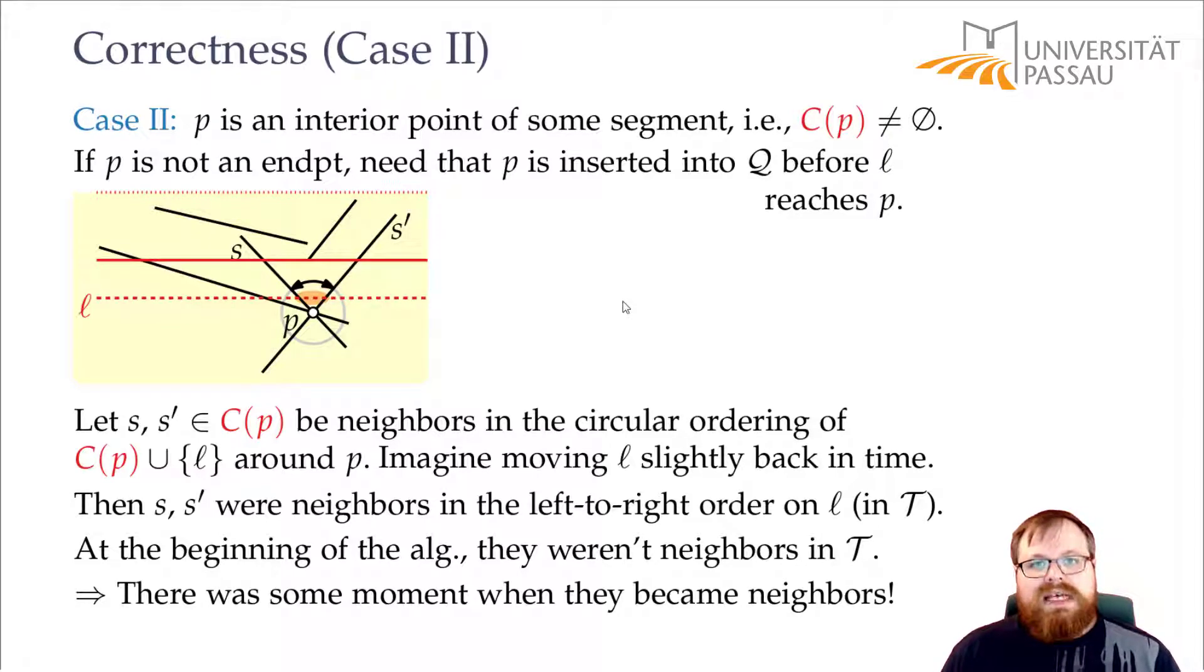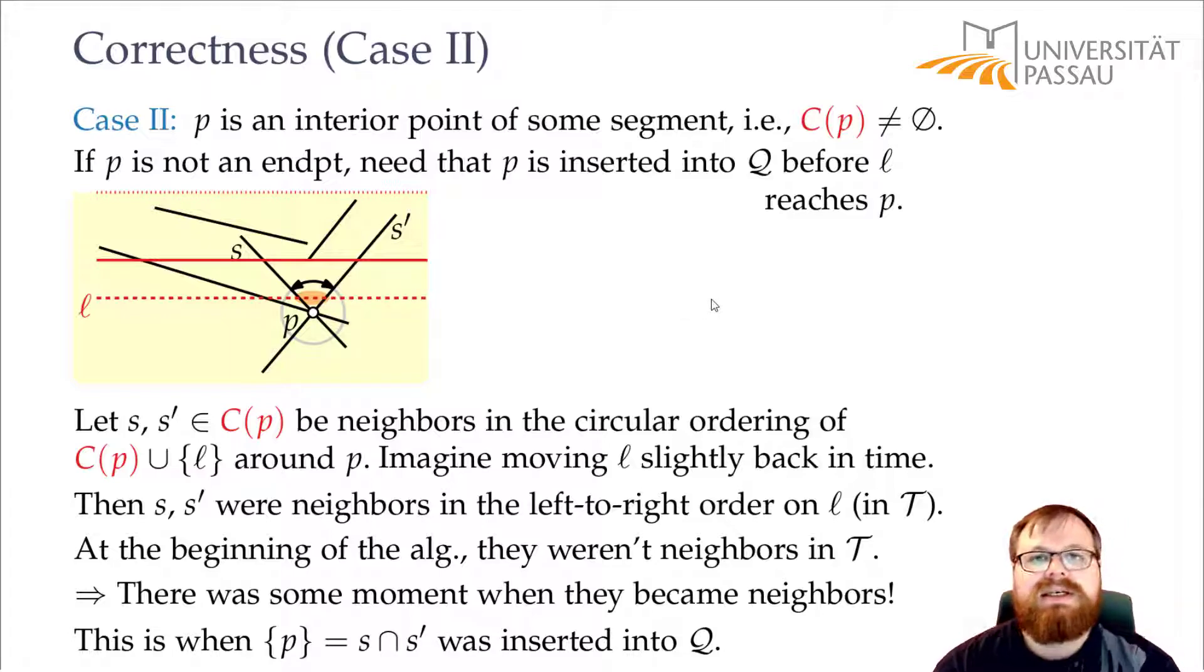But whenever two segments become neighbors, either because someone is removed or because someone is entered, we do our findNewEvent subroutine. And then we check whether they intersect. We find the new event point P and we add it to the queue. So at this point in the algorithm, our point P will have been added to the queue. And this is basically all we need.